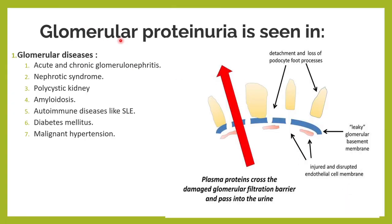Glomerular proteinuria is seen whenever there is damage to the glomerulus, which can happen because of damage to the glomerular basement membrane, the endothelial cell lining, or the detachment of the podocytes and foot processes, which can happen in case of glomerulonephritis — primary or secondary — as well as in diabetes mellitus, hypertension, and autoimmune diseases like SLE.